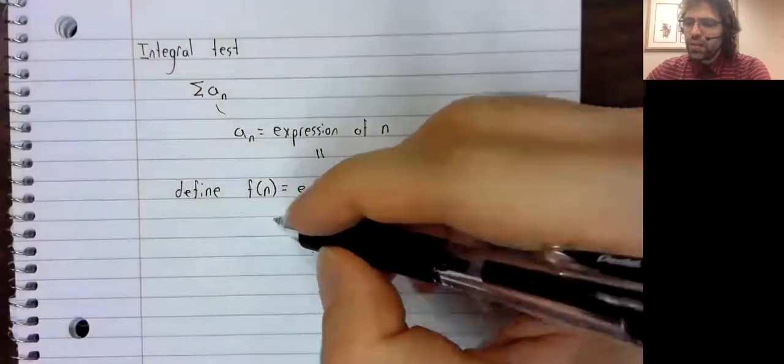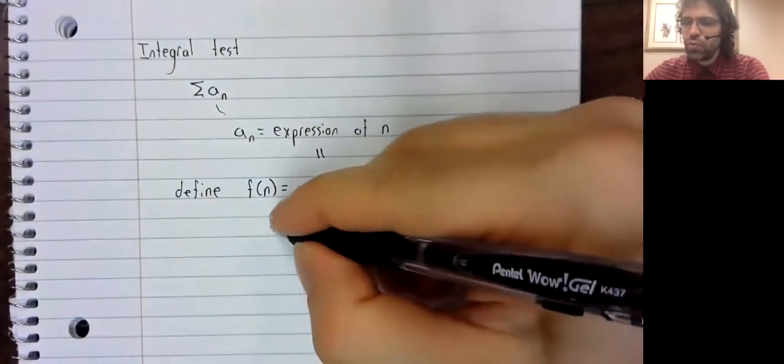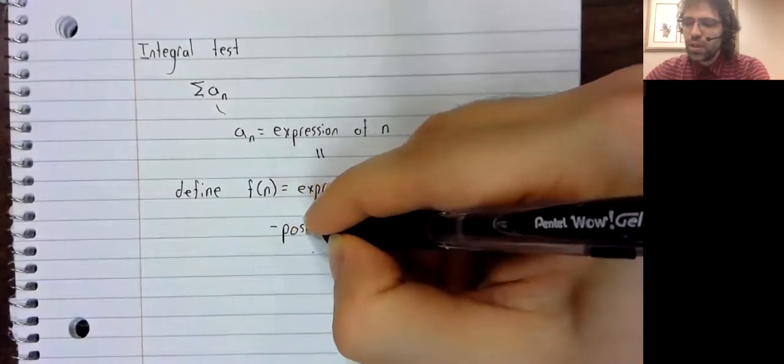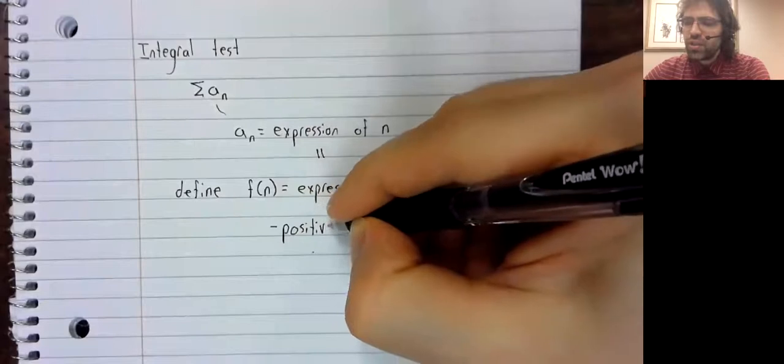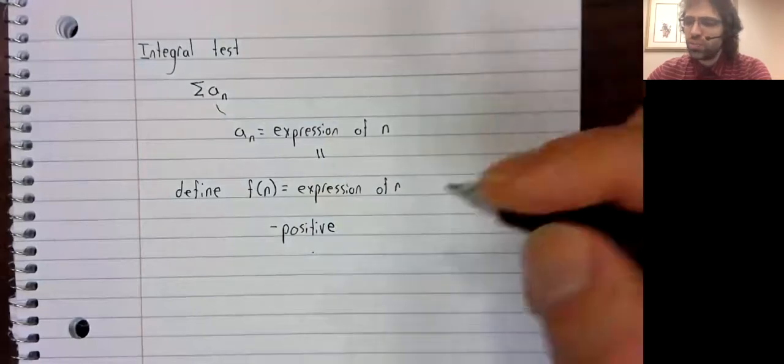And suppose this function has a few properties. It's entirely above the axis. That is to say, it's always positive.